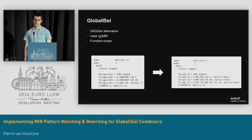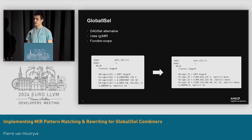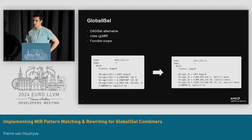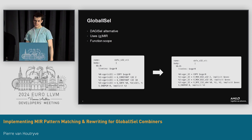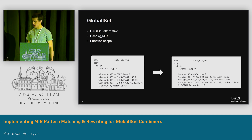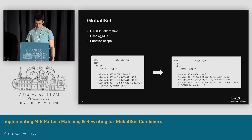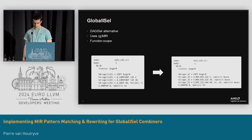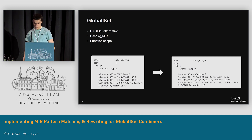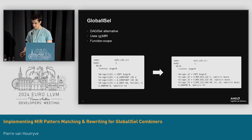In case you're not familiar with Global ICEL, here's a quick summary. Global ICEL is an alternative to DAG-based instruction selection. It reuses the machine IR representation with some small twists and new opcodes to make it more generic. It also operates on a function scope instead of a basic block scope, which allows for smarter instruction selection.